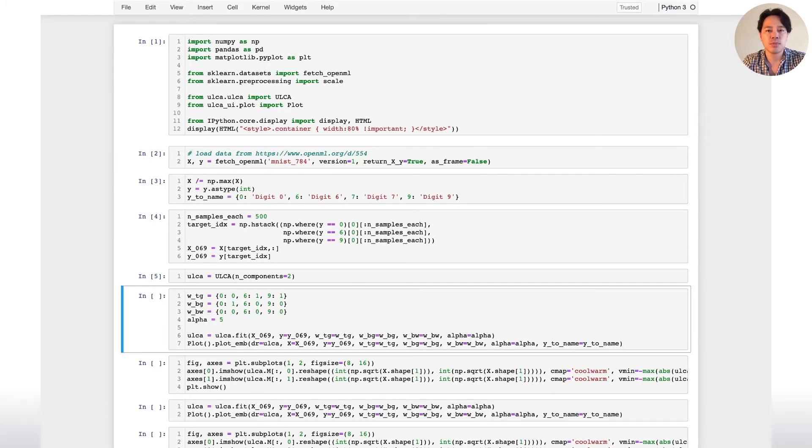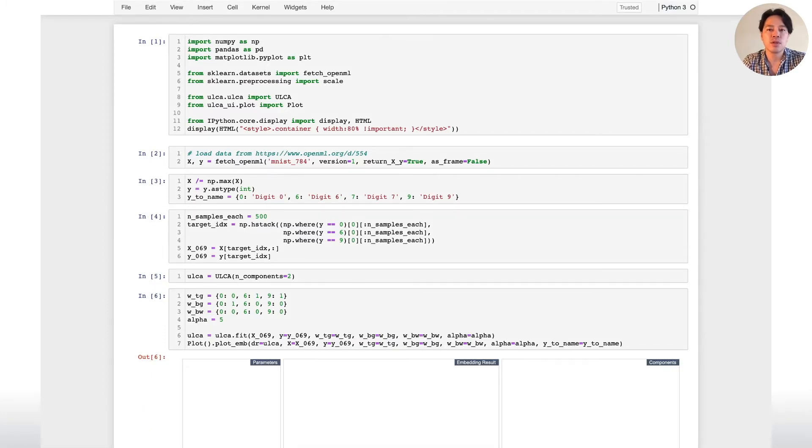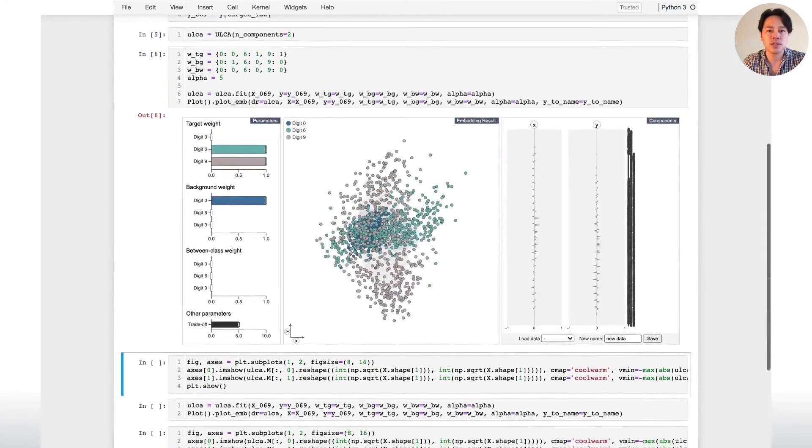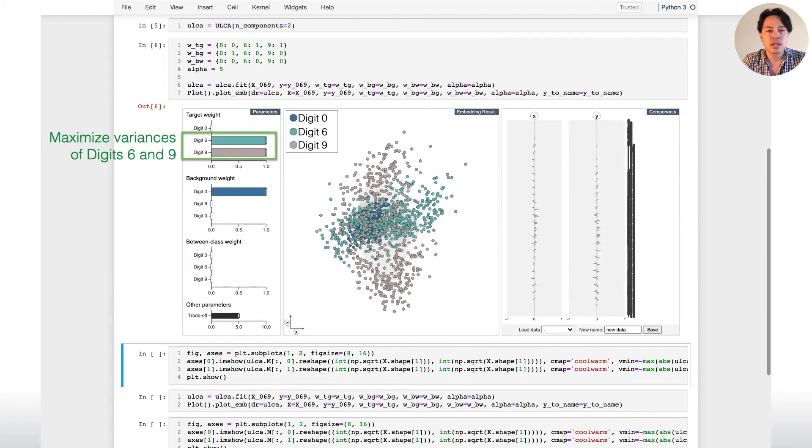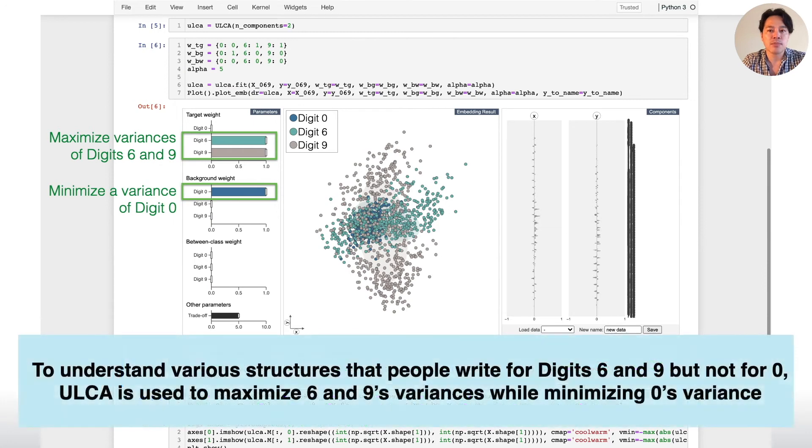We first perform pre-processing to the data. Then apply ULCA and show the result with the visual interface. Here, the initial parameters of ULCA are set to maximize the variances of digits 6 and 9 while minimizing the variance of digit 0.